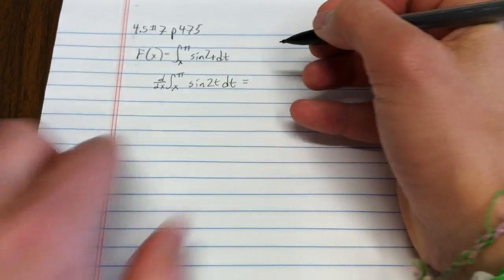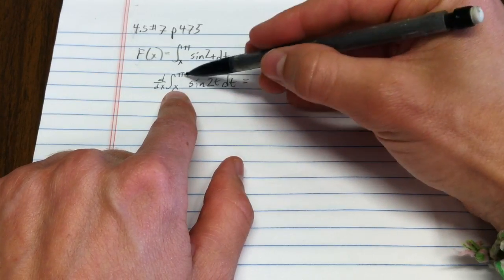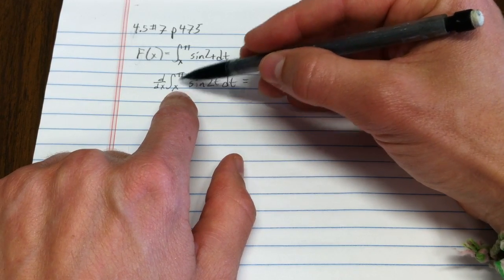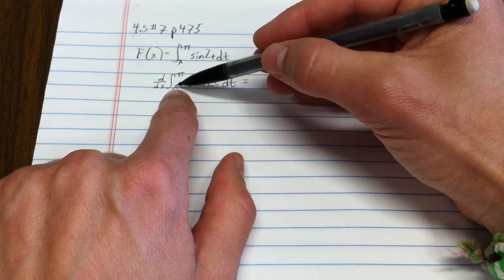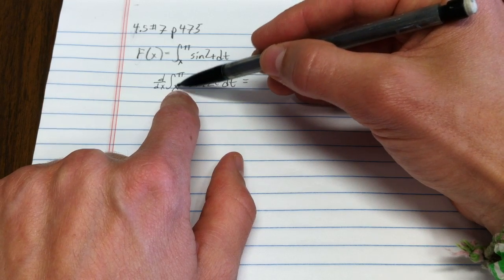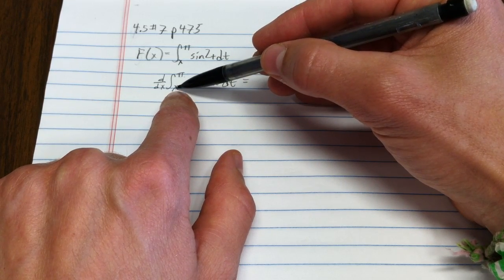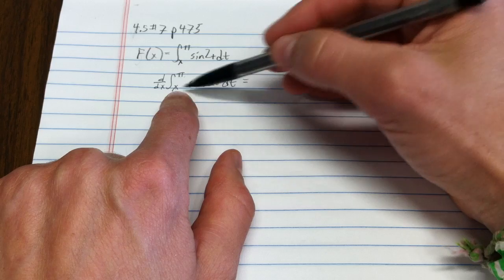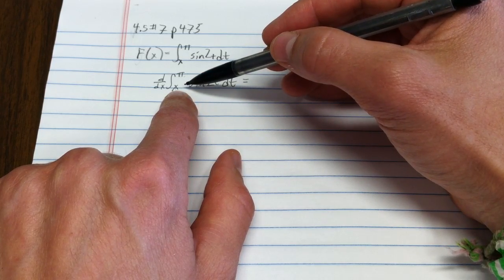Now, you could actually flip that and add a negative sign, because this is the area under this curve between x and pi, and as x is increasing, the area under this curve is decreasing.